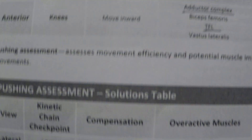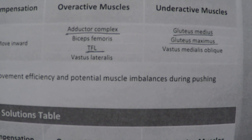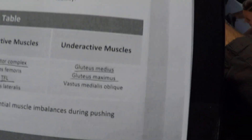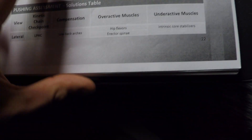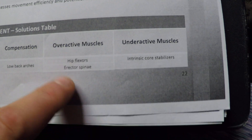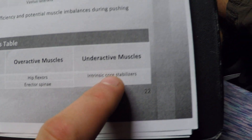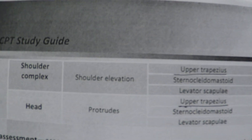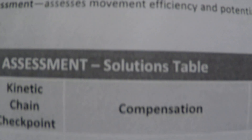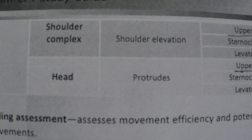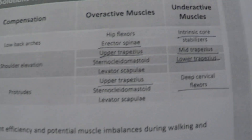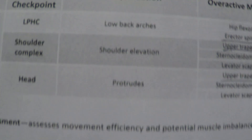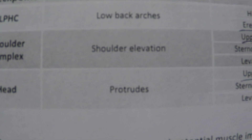You need to know the single leg squat assessment. If the knees move inward, overactive is adductor and TFL, underactive is gluteus maximus and medius. For the pushing assessment, if the low back arches, overactive is erector spinae and underactive is intrinsic core stabilizers. For shoulder elevation and head protrusion, you need to know the overactive and underactive muscles.